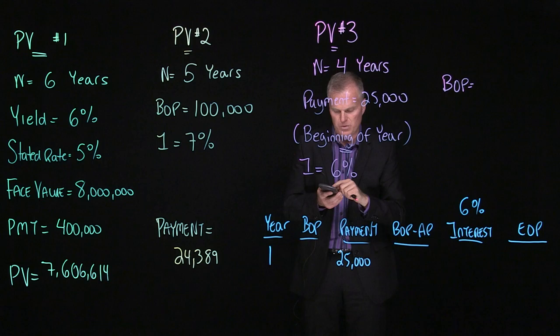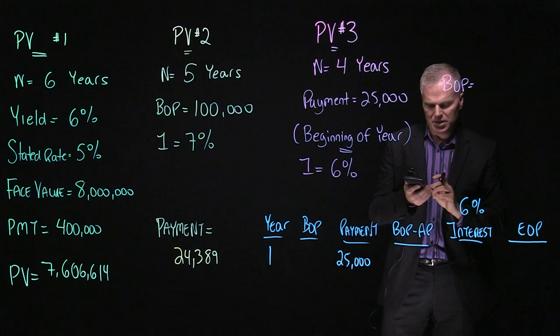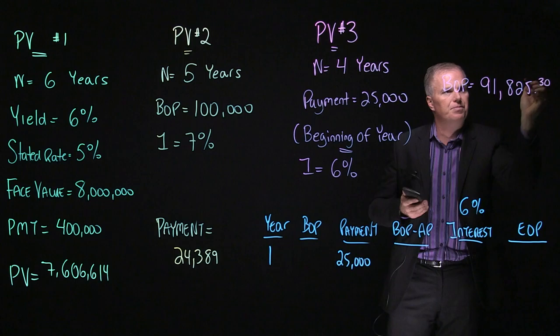So let's make sure we know how to do that. So let's enter in our data. 4N, 25,000 payment, 6IY, compute present value. And again, it shows up as a negative number. Just hit the plus minus, change it to a plus number: 91,825 and 30 cents.